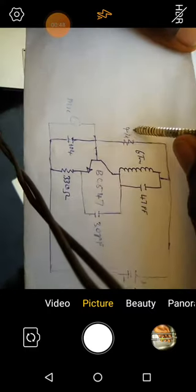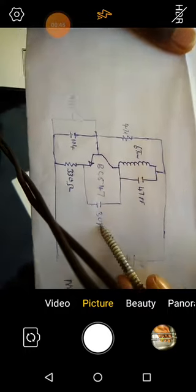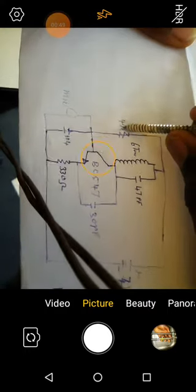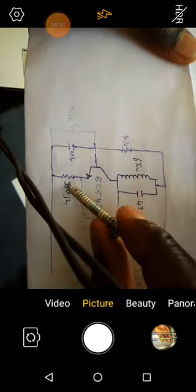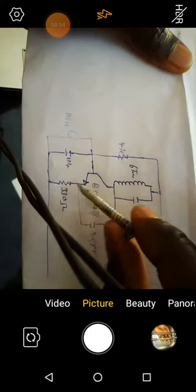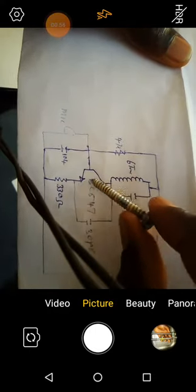This is our 4.7pF capacitor. This is our 3.7pF capacitor. This is 4.7k resistor. This is 104 capacitor. This is to take care of protecting our BC547 from damage.